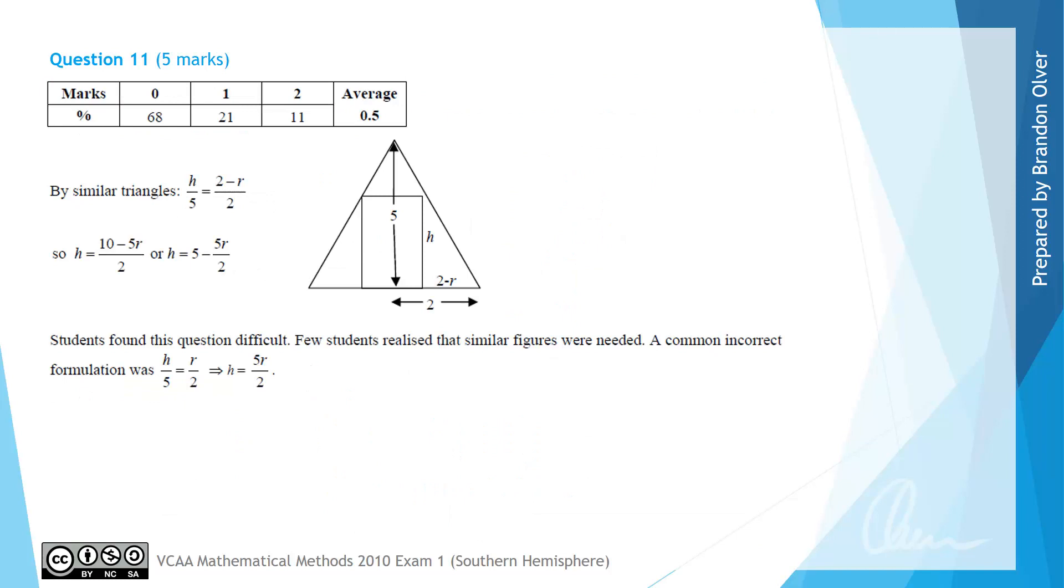From the examiner's report you can see their working is very similar and they said that students found this question difficult with only about 11% of students getting full marks for this question and almost 70% of students getting no marks whatsoever. The issue here is that few students realised that similar figures were needed to solve this problem. A common incorrect formulation was the wrong ratio that h over 5 is equal to r over 2.